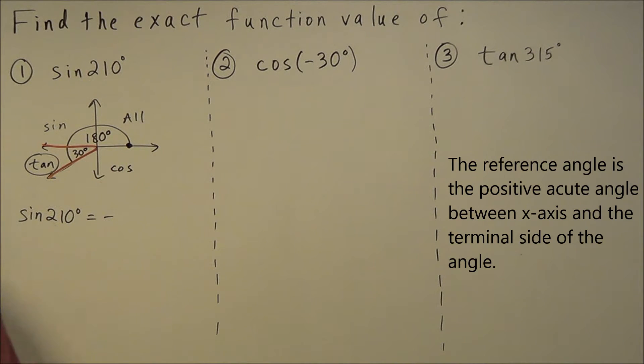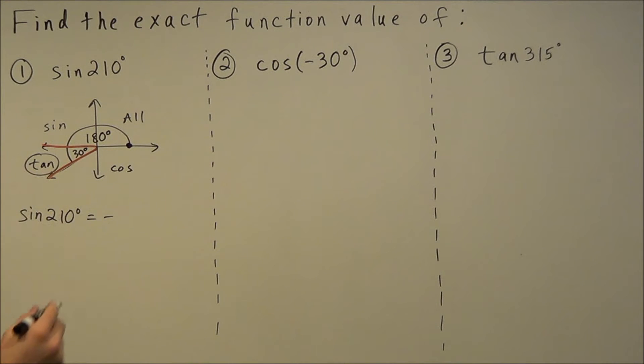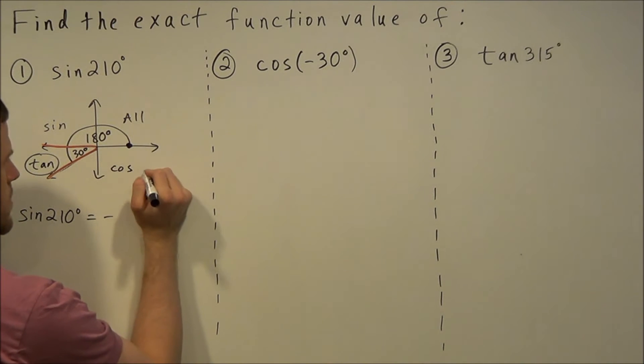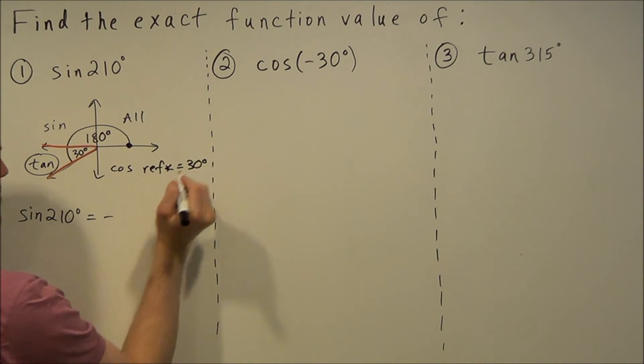Our reference angle, remember by definition, is the positive acute angle between the x-axis and the terminal side of the angle. This is the most important step to answering all three of these questions, that you identify the reference angle. In this case our reference angle is 30 degrees.